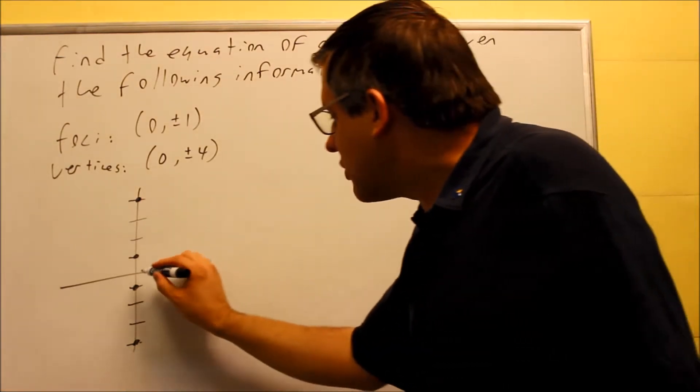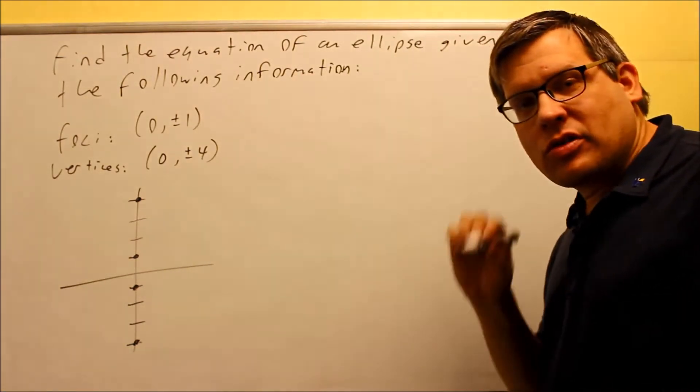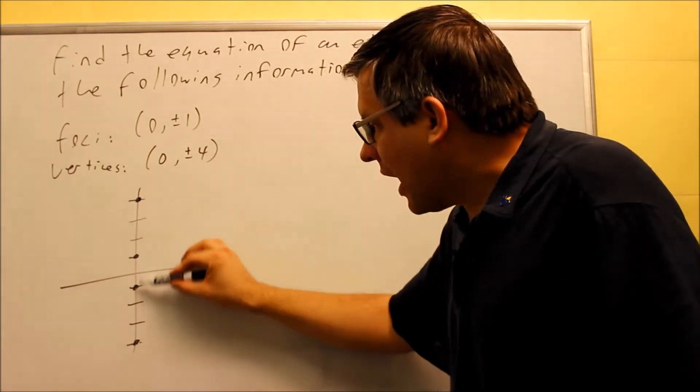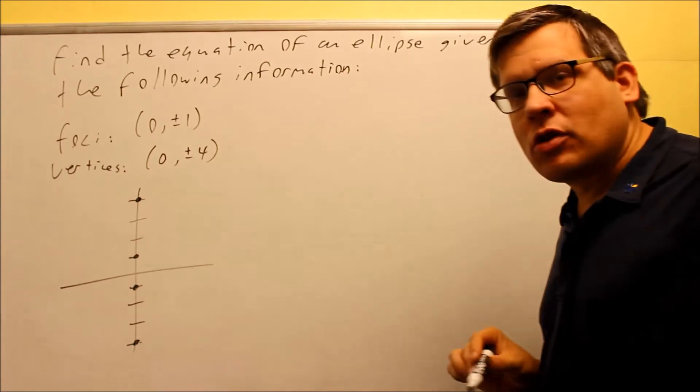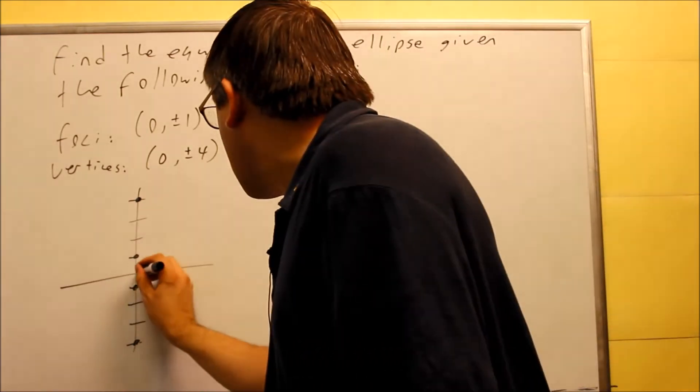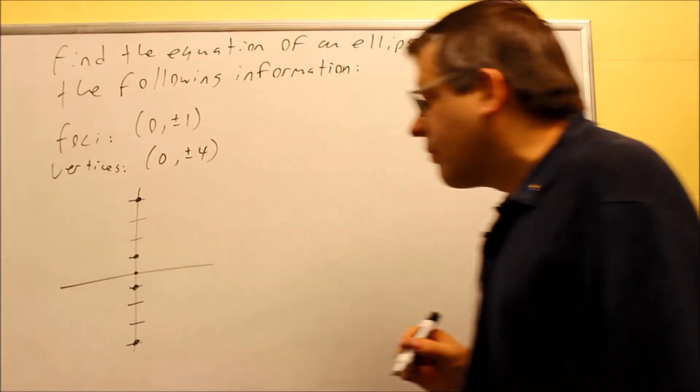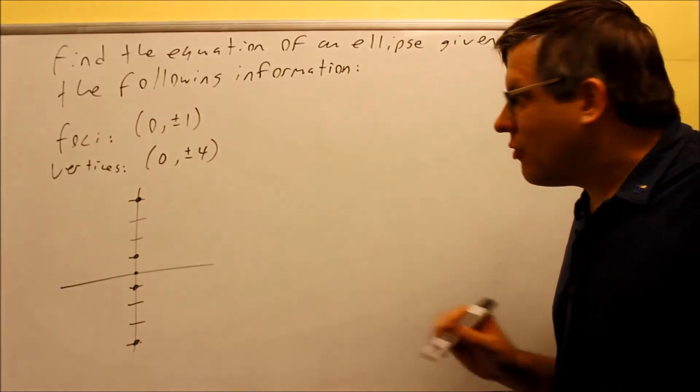What I also know is that I know the center. I know the center because the center is always halfway between the foci and halfway between the vertices. So (0, 0) is going to be right here.